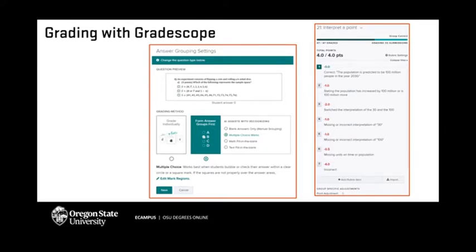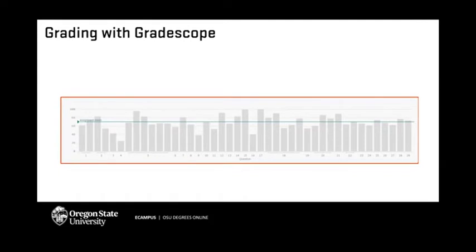We also get really detailed statistics for every single question in Gradescope — not just multiple choice, but open-ended questions too. We used to get good information about multiple choice questions from scantrons, but now we get that for open-ended questions as well. Just looking at a bar graph we can quickly see which questions students did well on and which ones they struggled with. For example, if question four shows only about 25% of students got it correct, we can pinpoint where students still have problems.